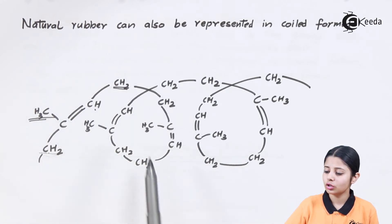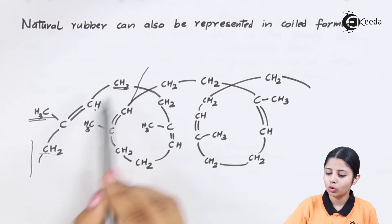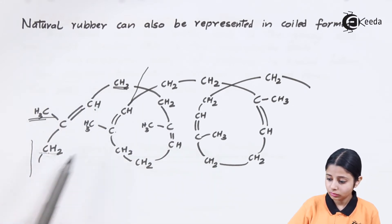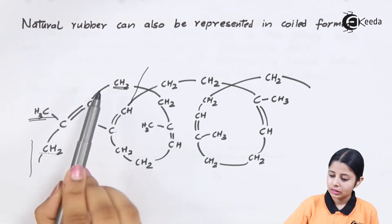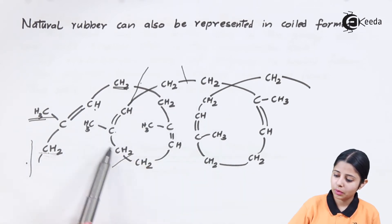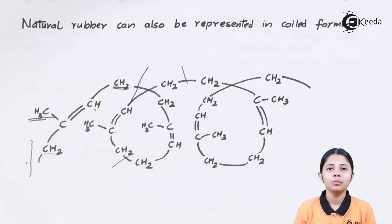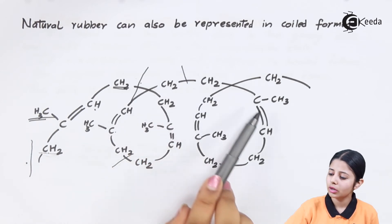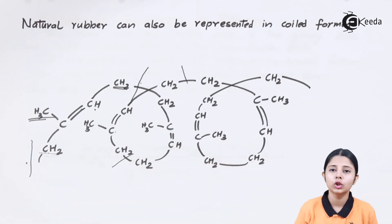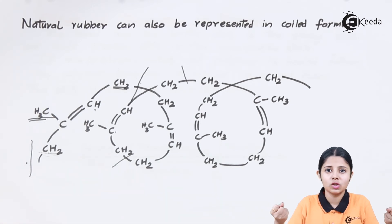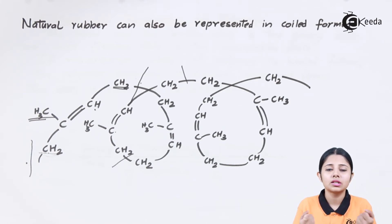This is the entire structure from one monomer to the next. The second monomer starts here — the structure is being replicated because it is the same monomer repeating. These monomers are coiled together in the form of a spring. Because they are in the form of a spring, when I stretch them they get stretched, and when I release them they return to their original position. This is why rubber possesses the property of elasticity.